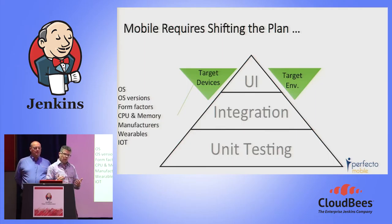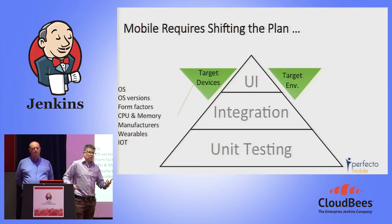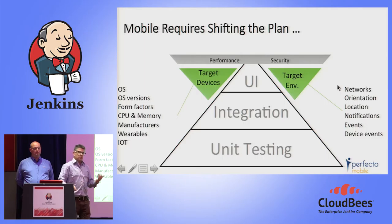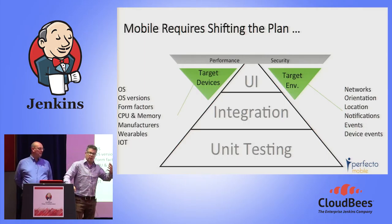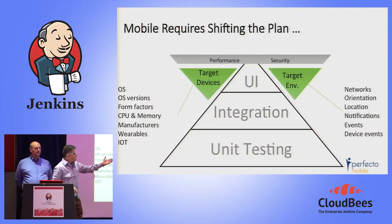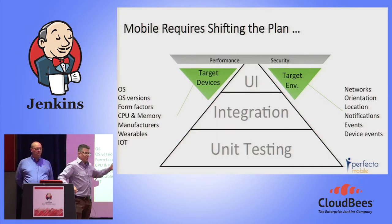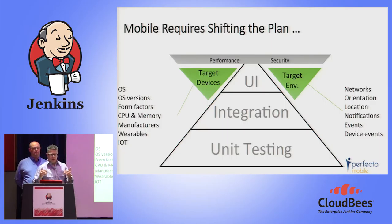We also look at CPU and memory — how your application and device cope when many other things are running in parallel on different hardware. Then there's the target environment: the user profile includes different network conditions, different locations, different notifications, and interoperability scenarios with pop-ups, events, phone calls, and watch notifications. All of these are part of your entire end-user environment and need to be implemented as part of your strategy on top of traditional UI, integration, and unit tests.